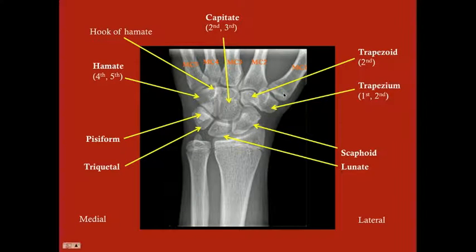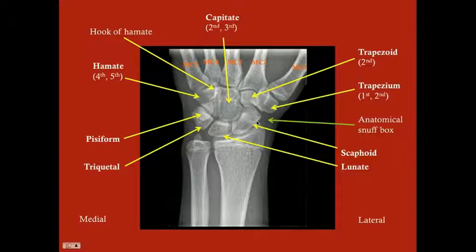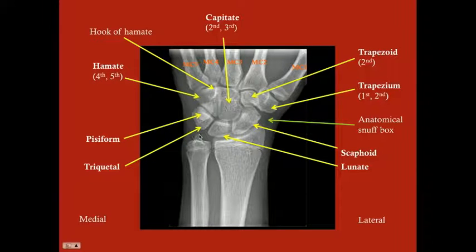Another important landmark is the anatomical snuff box — the space between the trapezium, the scaphoid, and the very distal radius. If you extend your thumb out, you can see a little gap at your wrist — that's your anatomical snuff box. Also note the styloid process coming off the ulna.